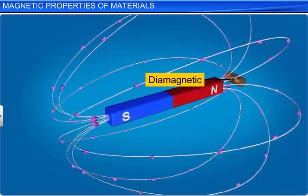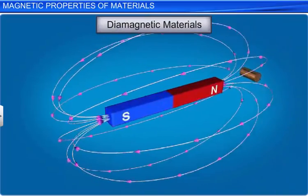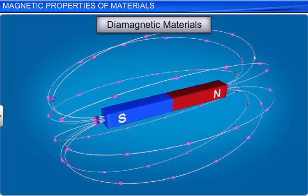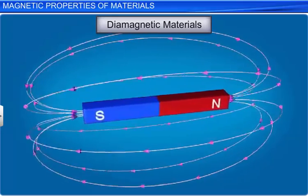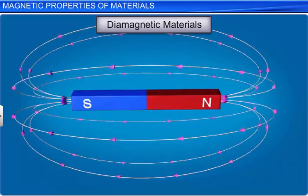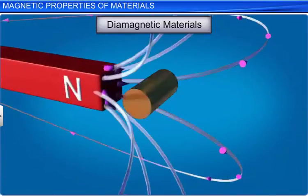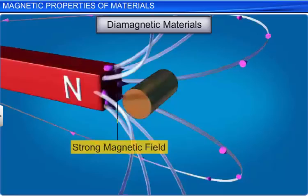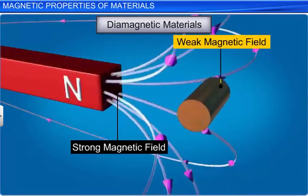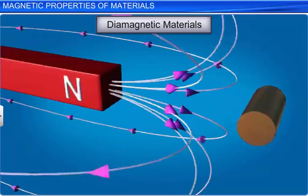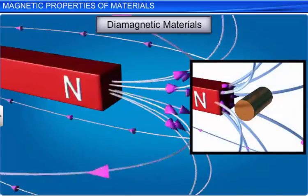Diamagnetic materials are the materials that are repelled by magnets. When a bar of diamagnetic material is placed in a non-uniform external magnetic field, it tends to move from a region of strong magnetic field to a weaker magnetic field. We also observe that the magnetic field lines are expelled or repelled by the diamagnetic material and the magnetic field inside the material is reduced.